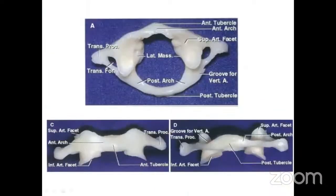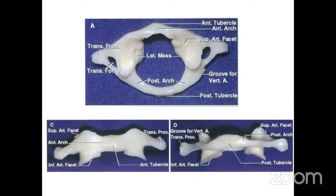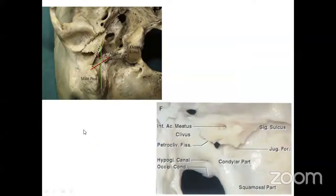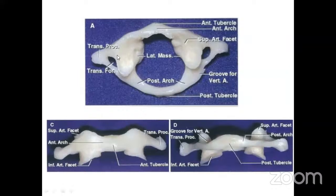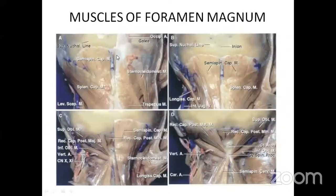The osseous anatomy of the occipital bone forms the great part of the foramen magnum. We also need to discuss C1, which forms the lower border. C1 has an anterior arch, posterior arch, lateral masses, transverse processes, and transverse foramina. Its superior articular processes articulate with the occipital condyles to form the occipitoatlantal joint.